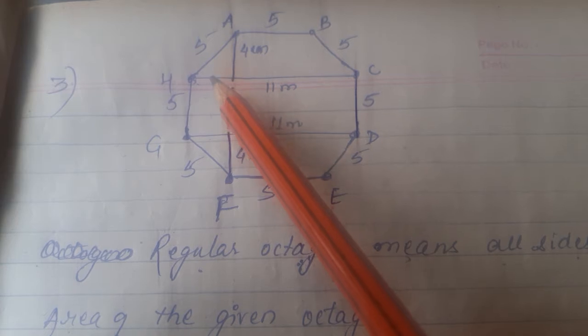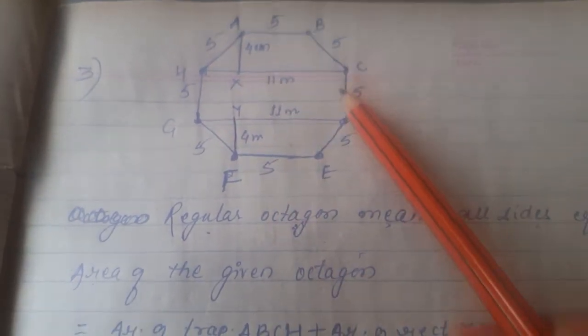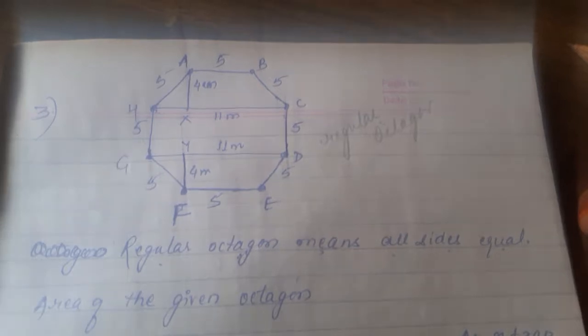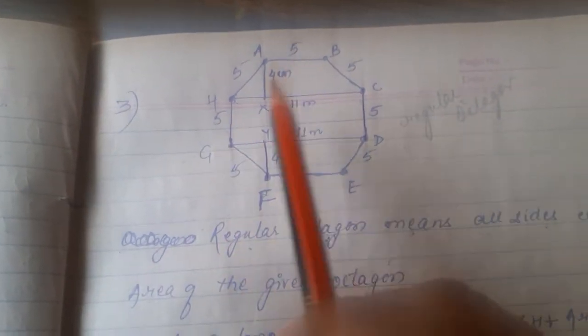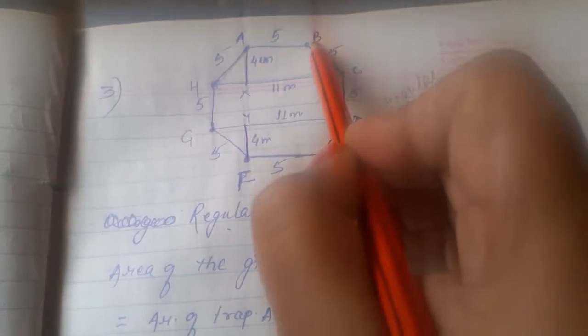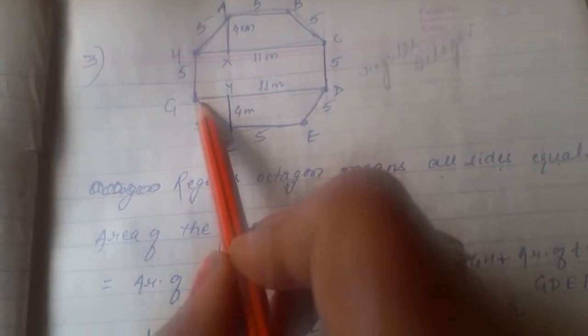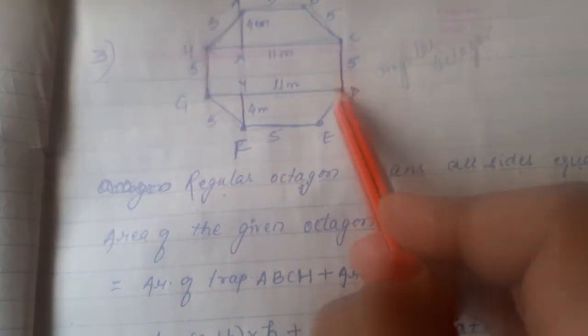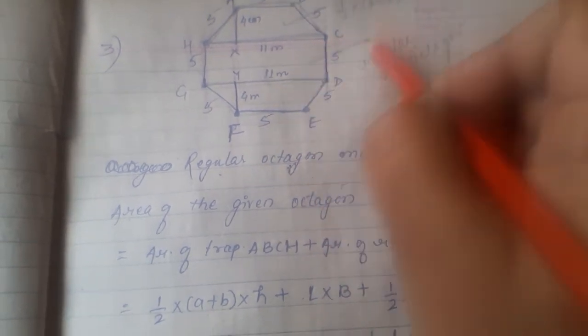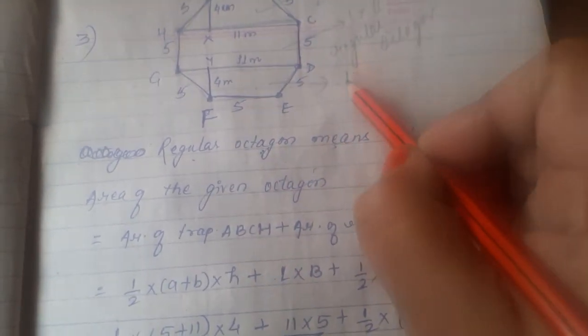A platform is given in the form of an 8-sided polygon, which we call an octagon, and it is a regular octagon — meaning all sides are equal, each being 5 units. We can see this figure as two trapeziums and a rectangle in the middle. Trapezium area is half into (A plus B) into H, rectangle area is L into B, and then another trapezium area is half into (A plus B) into H.